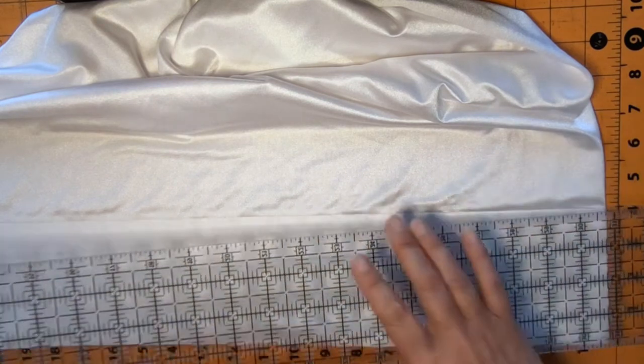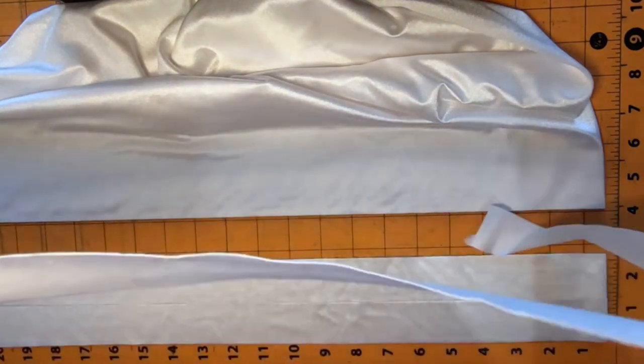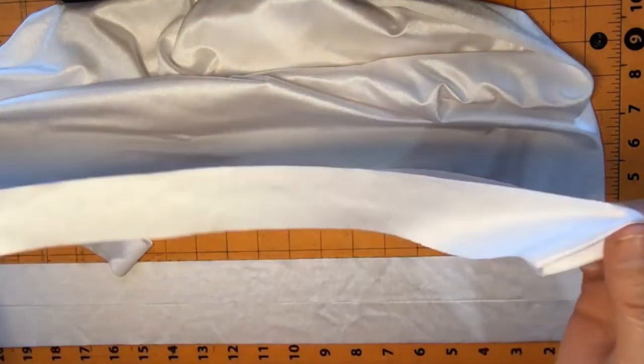When you're done, set aside the ruler and rotary cutter, and you should have a bunch of long binding pieces.